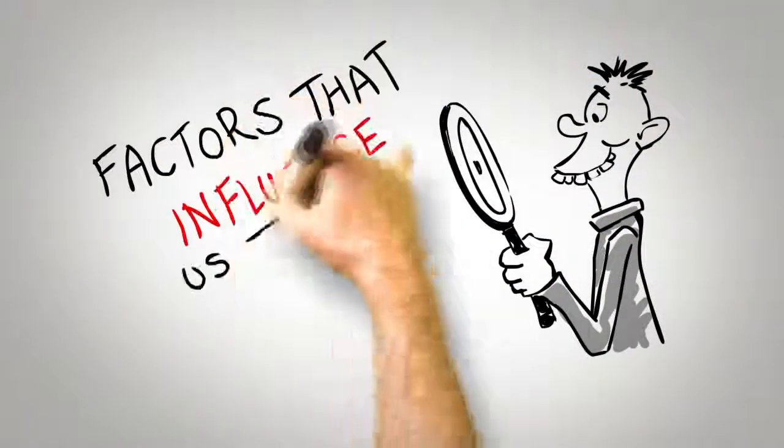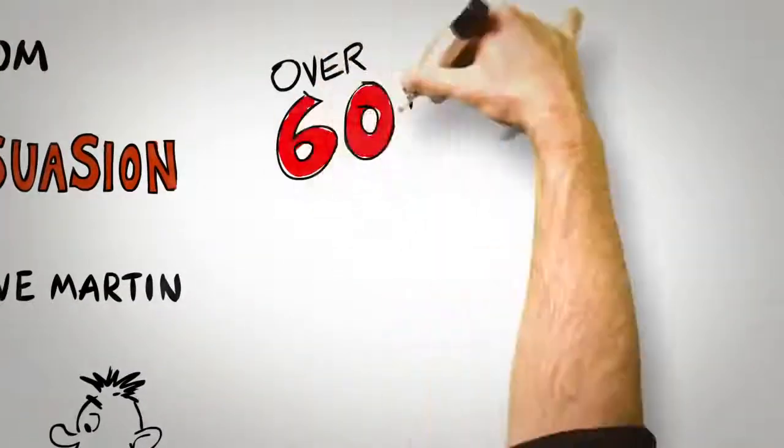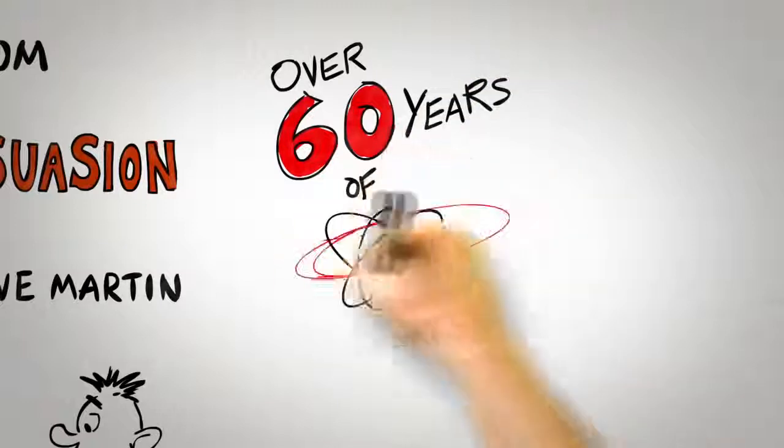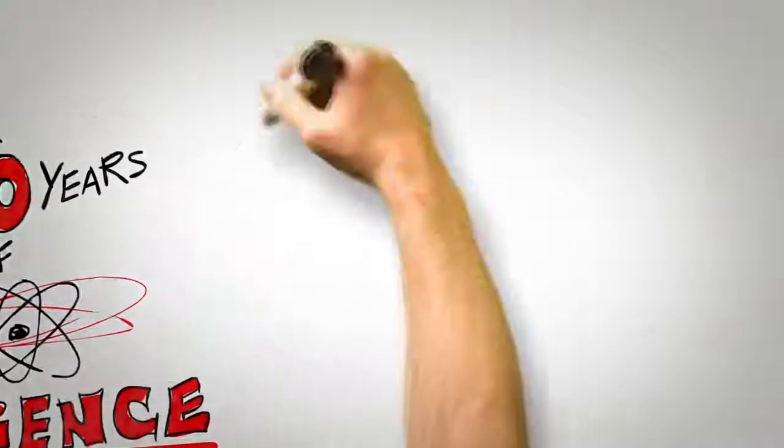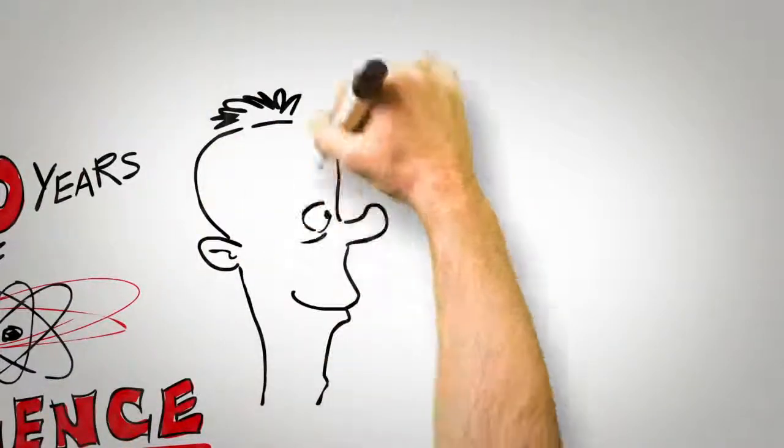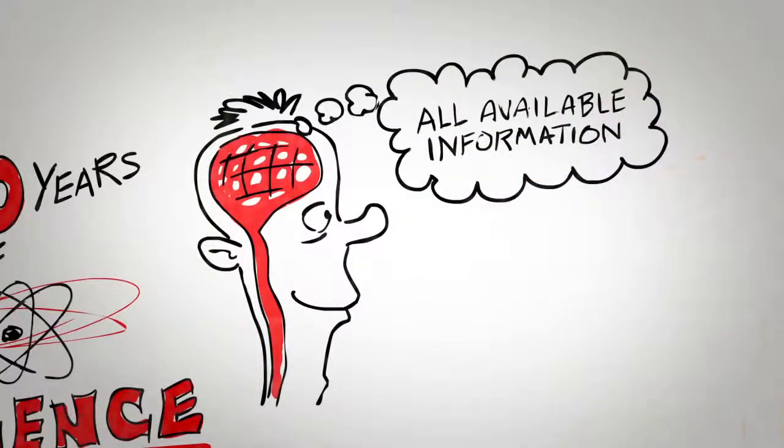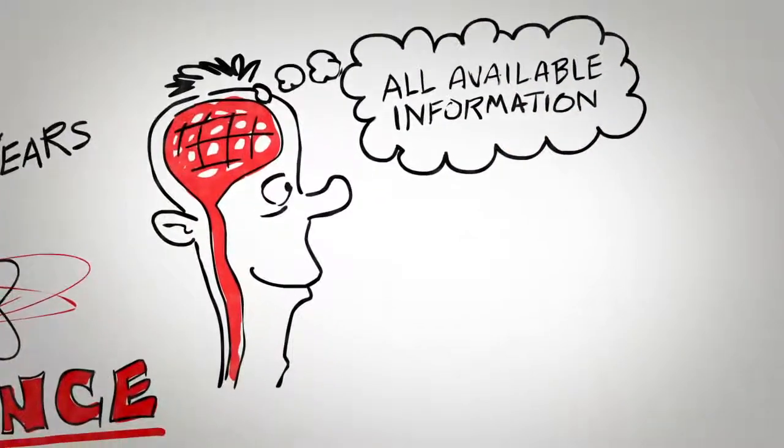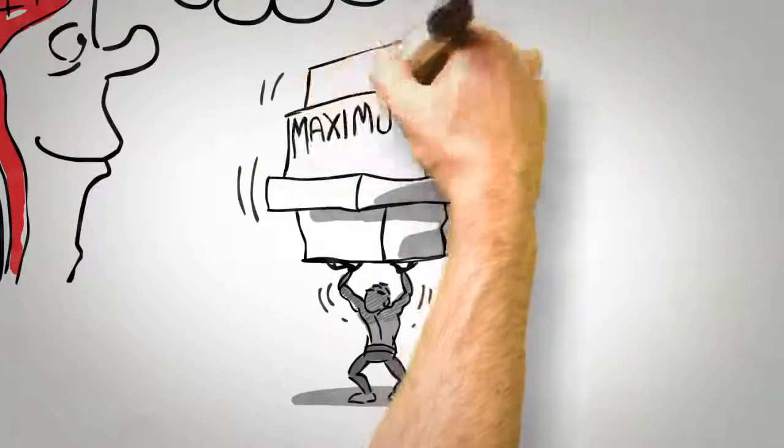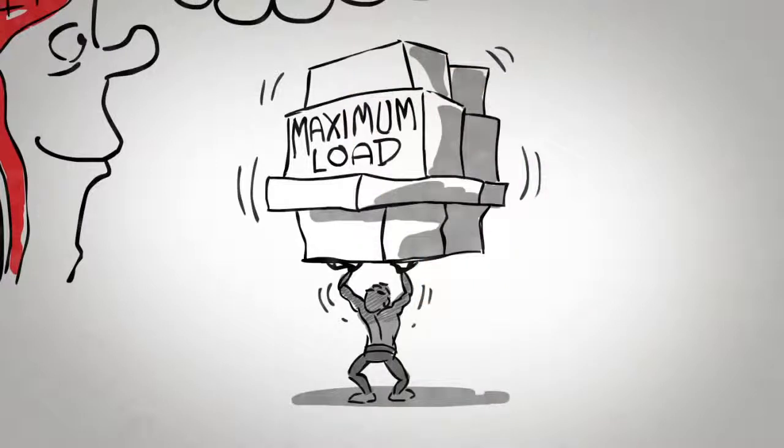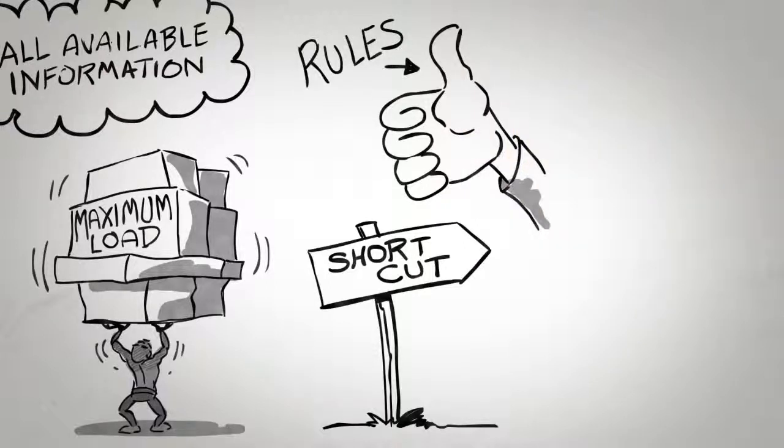Researchers have been studying the factors that influence us to say yes to the requests of others for over 60 years. And there can be no doubt that there's a science to how we are persuaded. And a lot of this science is surprising. When making a decision, it would be nice to think that people consider all the available information in order to guide their thinking. But the reality is very often different. In the increasingly overloaded lives we lead, more than ever, we need shortcuts or rules of thumb to guide our decision making.